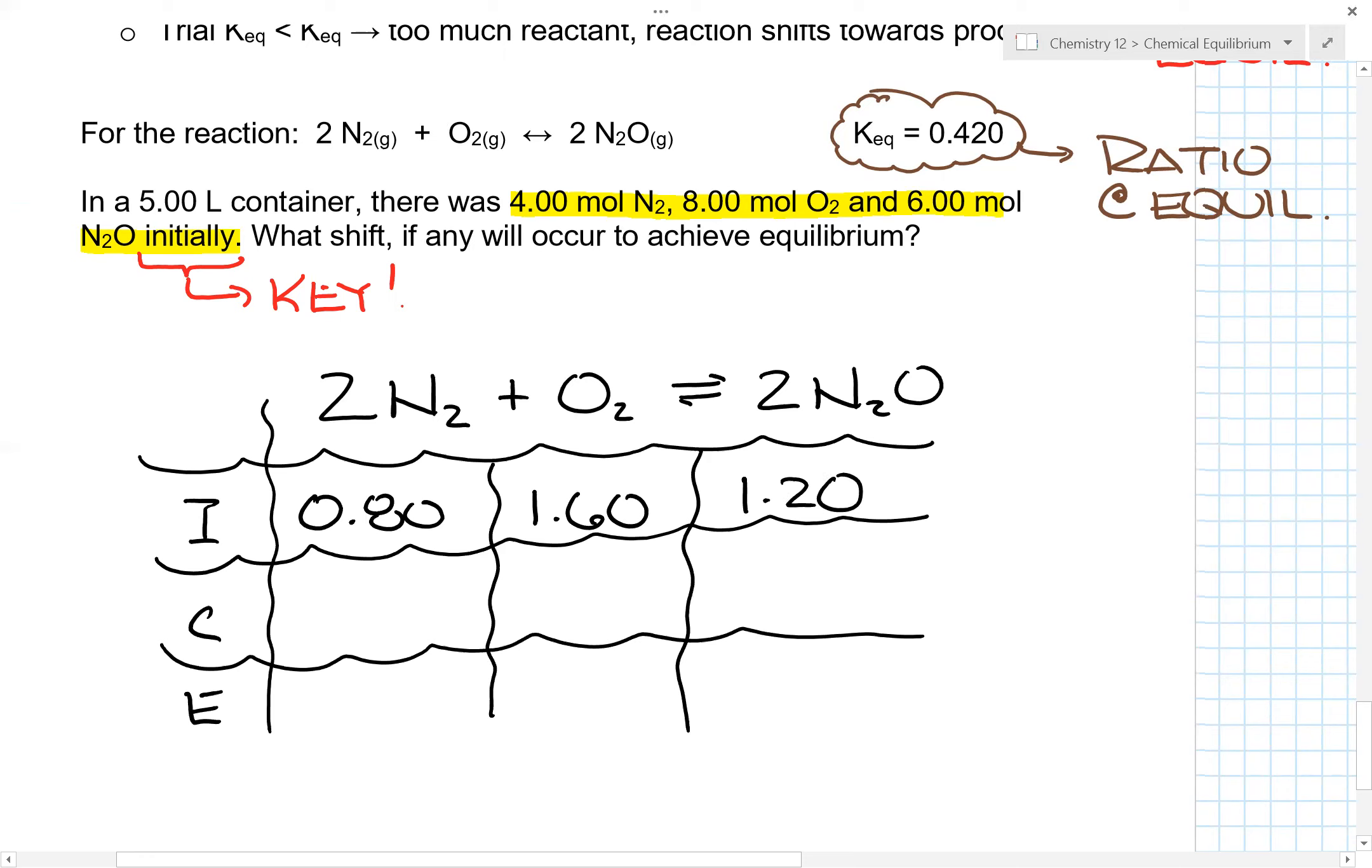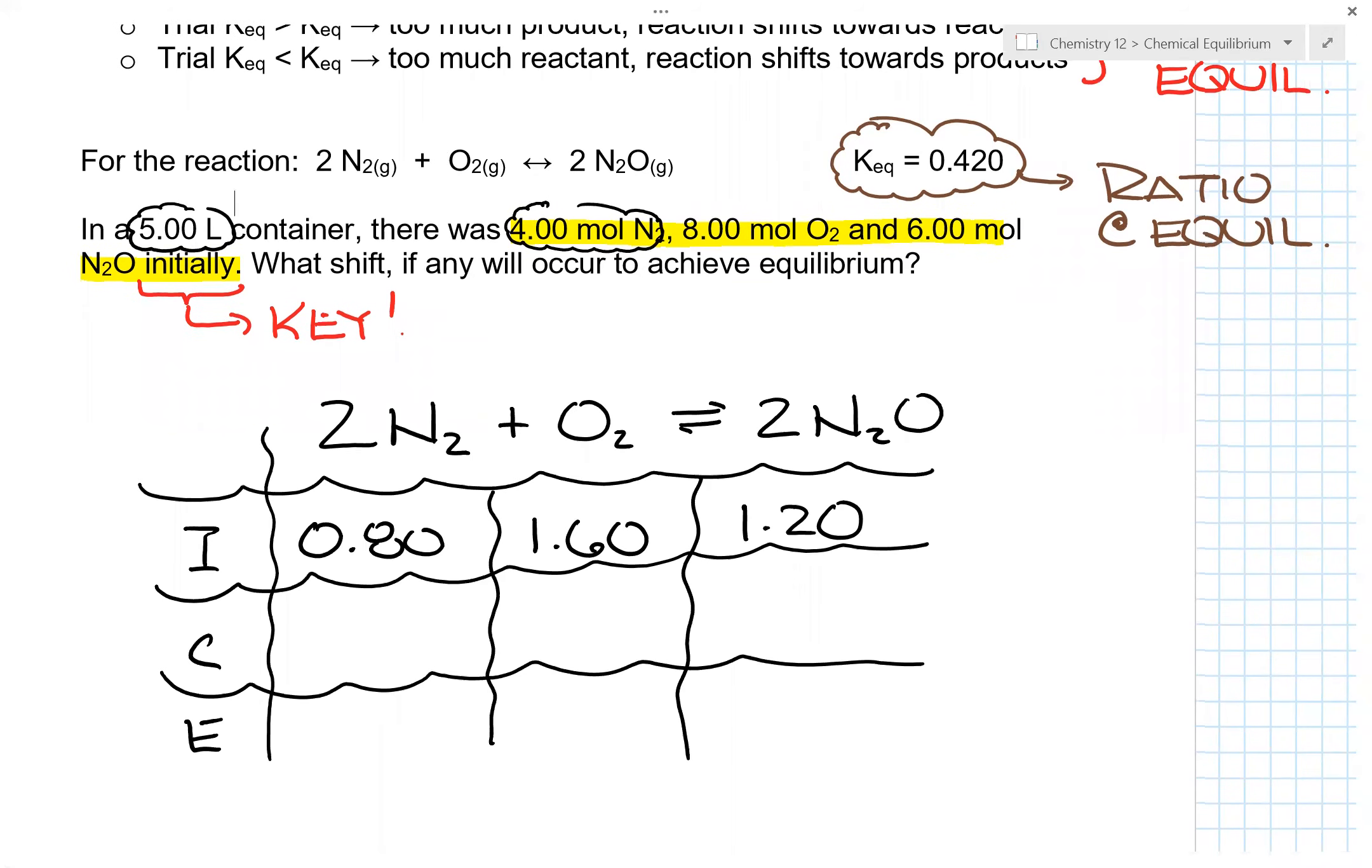Now you might ask, well Mr. Chan, where did you get these numbers from? And remember, this is concentration. So for N2, I had to take the 4 moles, which is up here, and I have to divide it by the 5 liters.